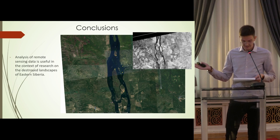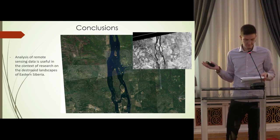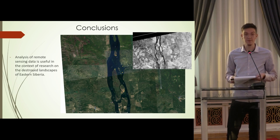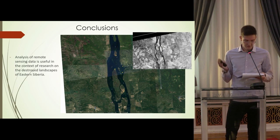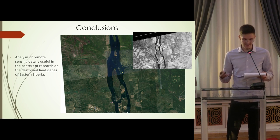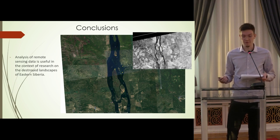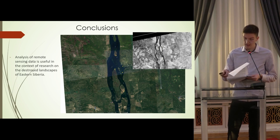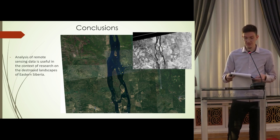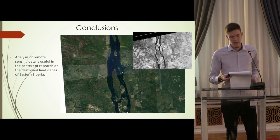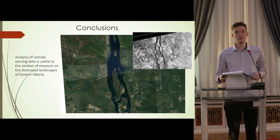Analysis of remote sensing data is useful in the context of research on the destroyed landscape of Eastern Siberia, and historical satellite imagery is of great importance there, providing the most detailed source of information in this context. Future researchers of this territory face an important task — they will have to be open to new technologies and new approaches.